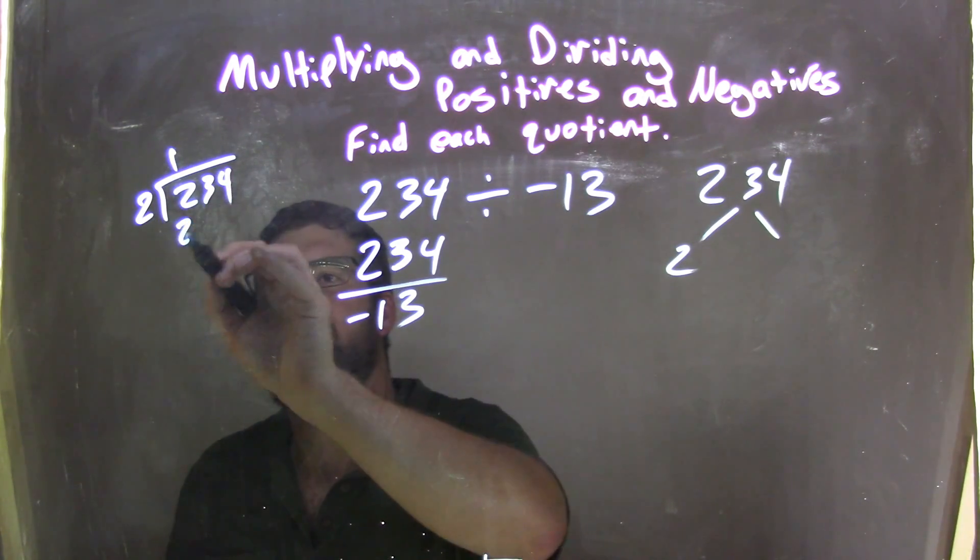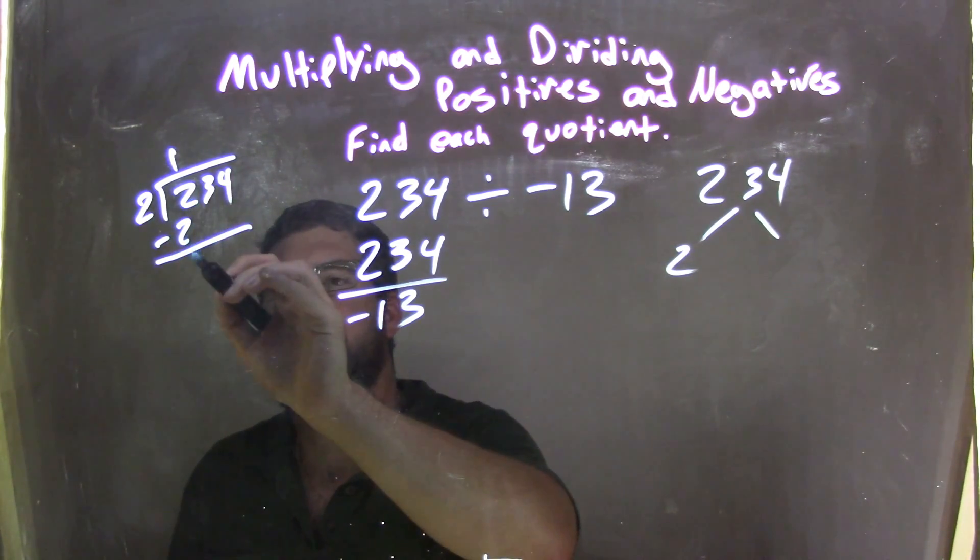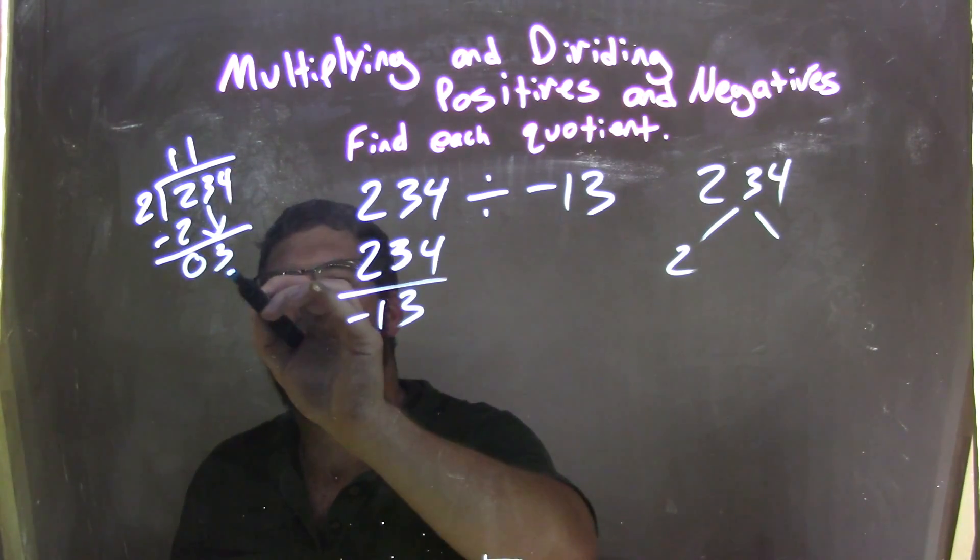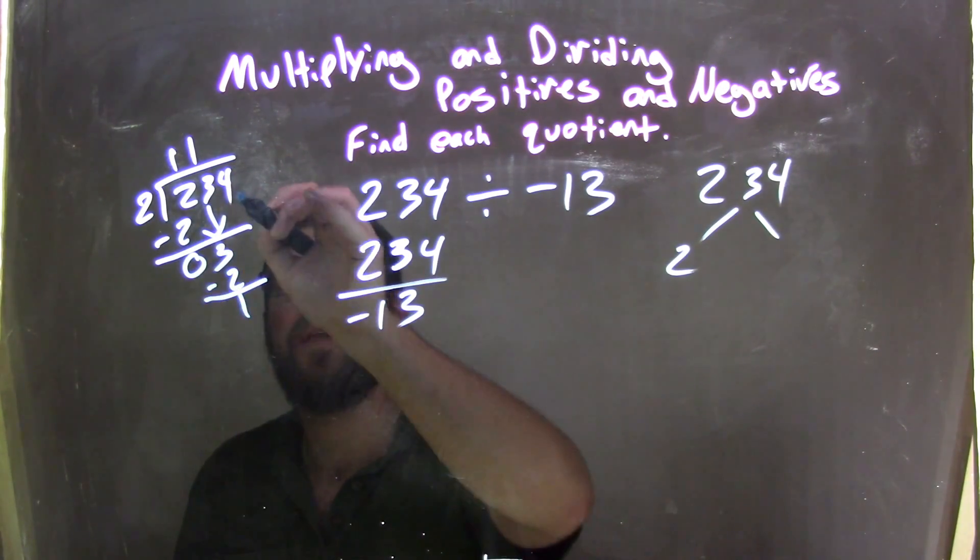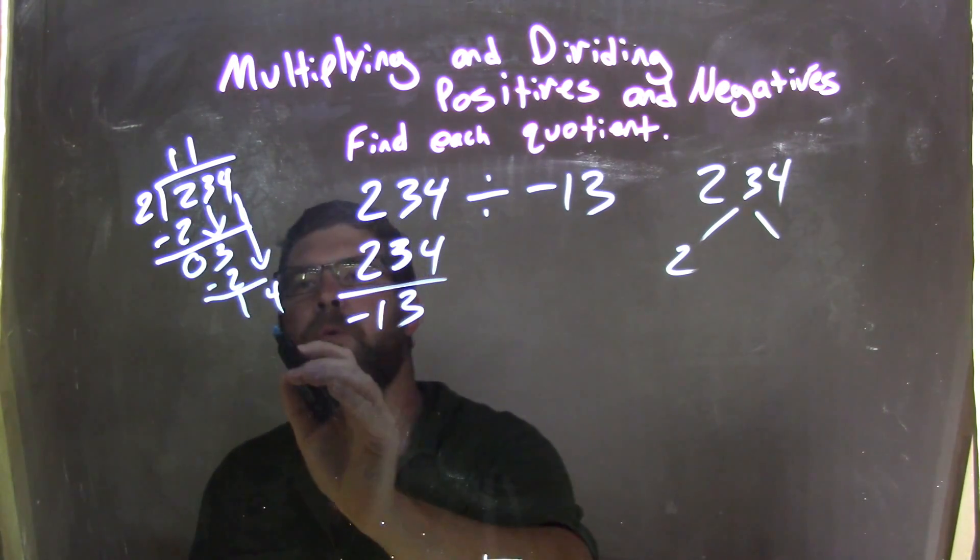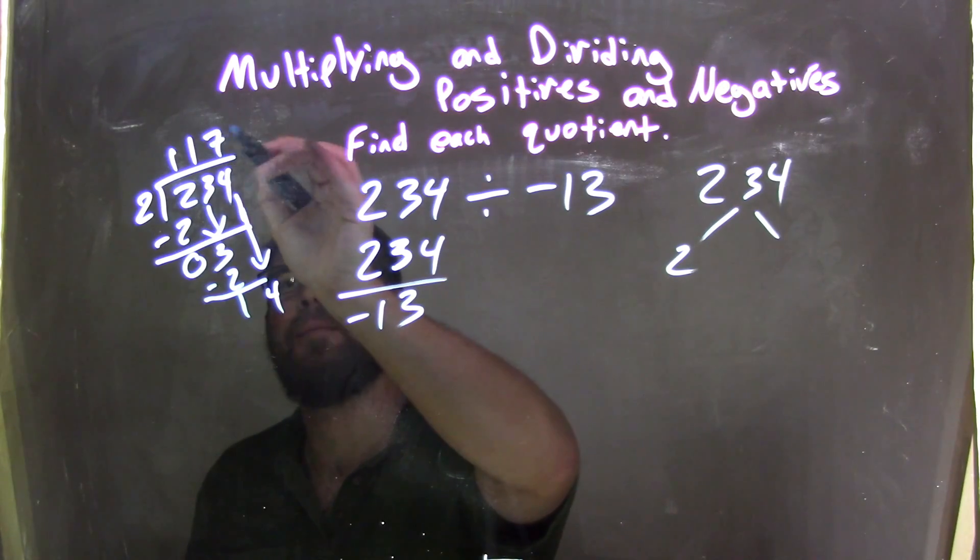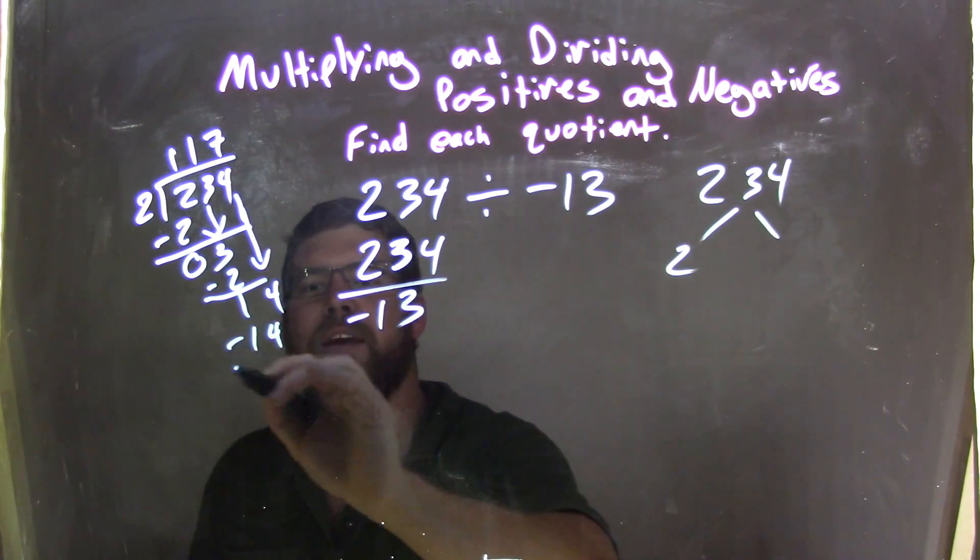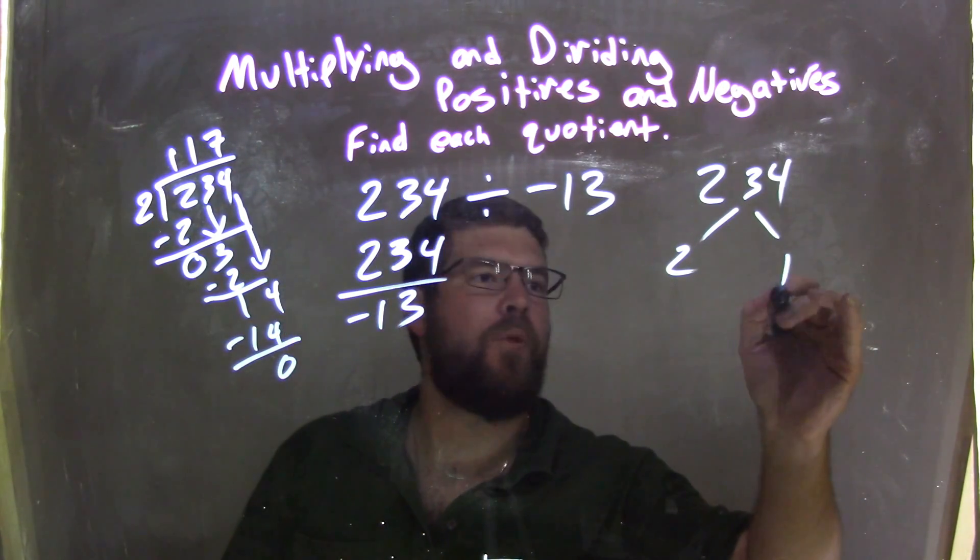2 goes into 2 one time, subtract 2 minus 2 is 0, bring down 3. 2 goes into 3 one time, 1 times 2 is 2, subtract them, 1, bring down this 4. And 2 into 14, 7 times, 7 times 2 is 14, and we're done, 0. So now we have 117.